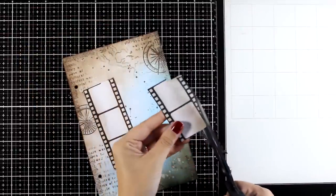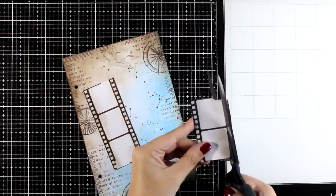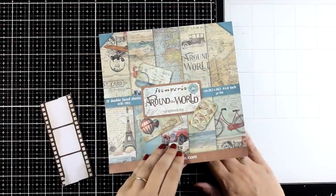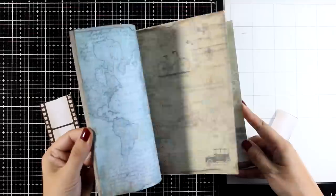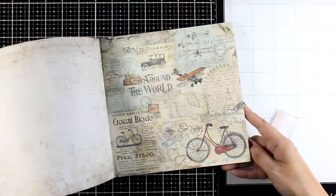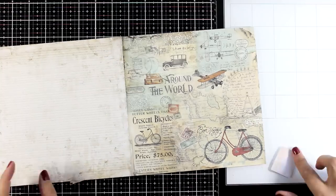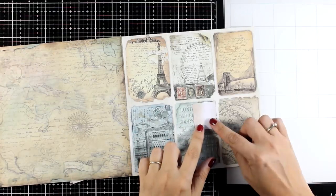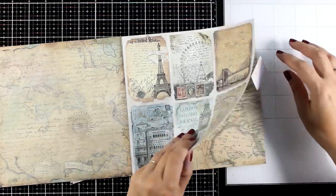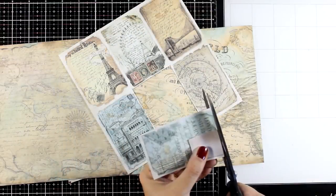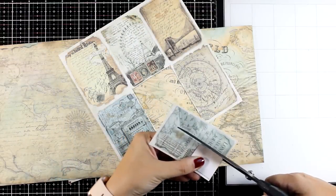So for that I will use a template. I just stamp that one more time so that I can cut out the window. Now I'm going to use areas from my paper pad to add on top of that film strip and I'm using the template so I know exactly how big I need to cut out that piece. I'm using images from an older paper pad by Stamperia, this is the around the world, but in any case black and white photos would work great for this theme. You can use your very own photos and print them out or you can find images online.